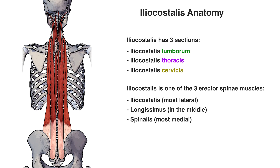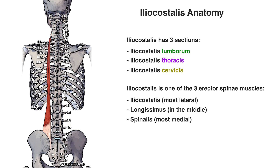We'll be going over the origin, insertion and action of the iliocostalis next. If you'd like to learn more about any of the other erector spinae muscles, I'll put links to my videos on them in the description box below. Now this muscle has quite a lot of origins and insertions, so to make things easier I've labelled all of the vertebrae down the right-hand side and the ribs on the left-hand side. We're only going to be looking at the origins and insertions on the left-hand side of the muscle — bear in mind they're duplicated on the right-hand side as well.